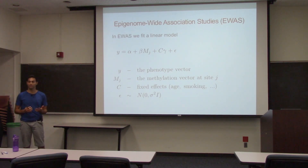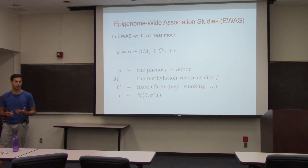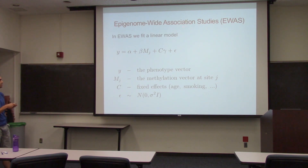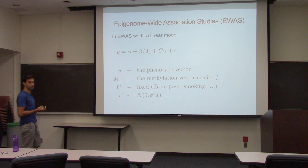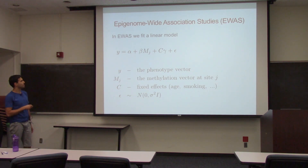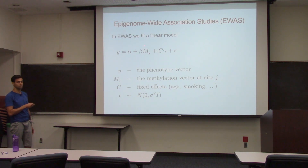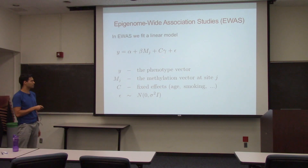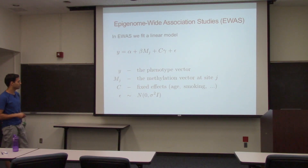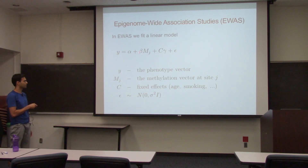One of the most common studies people have been doing with such data is what we call epigenome-wide association studies (EWAS), which is very similar in spirit to GWAS. What we do is fit a linear model where Y is some phenotype of interest, we have an intercept term, the specific methylation site J under test, the effect size beta we try to estimate, several covariates like age and gender, and an error term. The idea is to find whether we have a significant effect size.